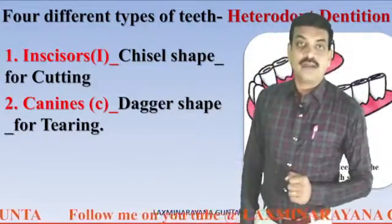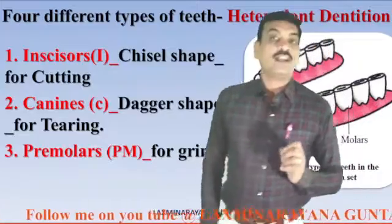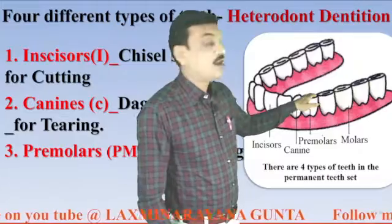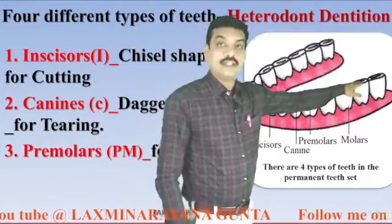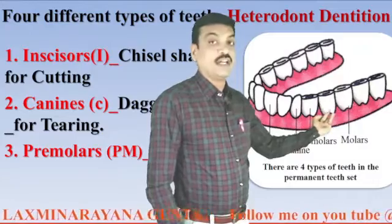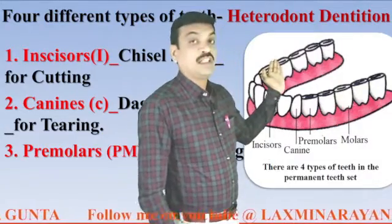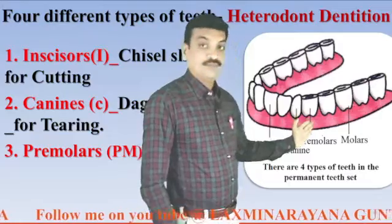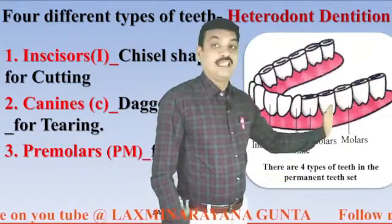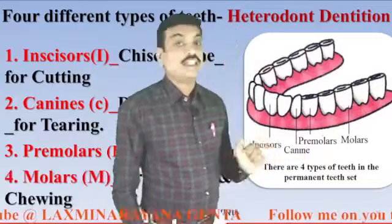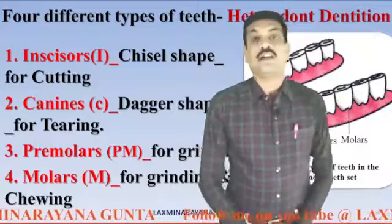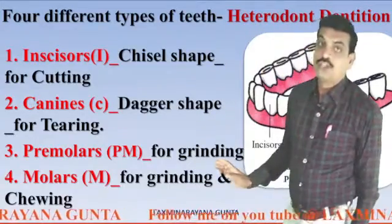Premolars are flat in shape and are meant for grinding. Molars are also flat in shape. Premolars are two in number in each quadrant, and the last three teeth are molars. Molars are meant for grinding and also for chewing. These are the four different types of teeth present in our buccal cavity.